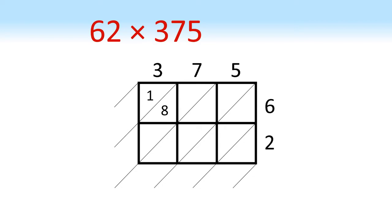If we now move along one square, we've got 7 times 6 is 42. The next square, 5 times 6 is 30. We now move on to the bottom row. Bottom left we've got 3 times 2 is 6, so there's 0 tens, 6 units, and continuing on like this we get 7 times 2 is 14, 5 times 2 is 10.